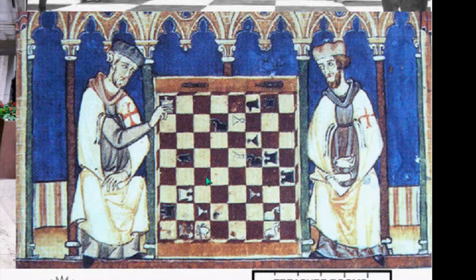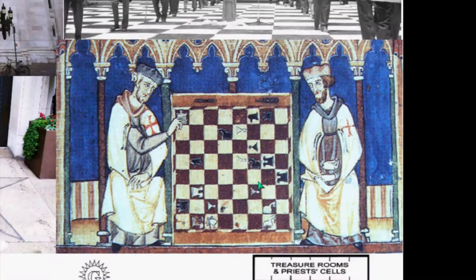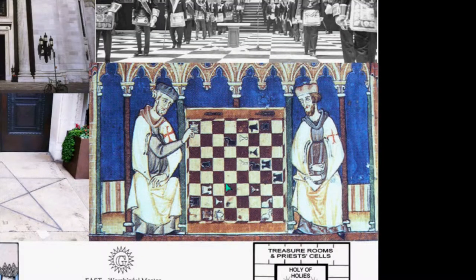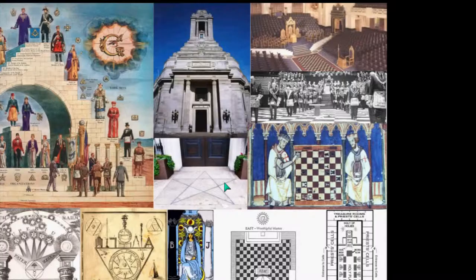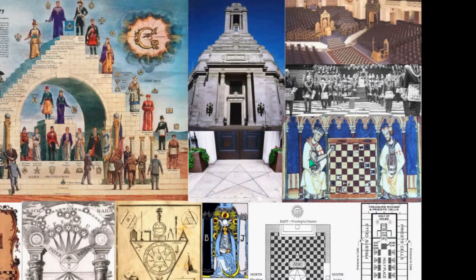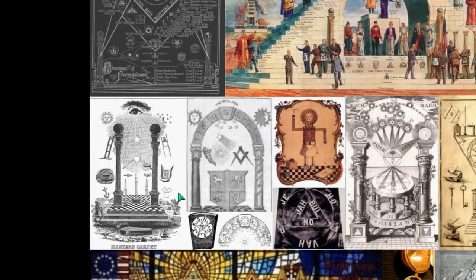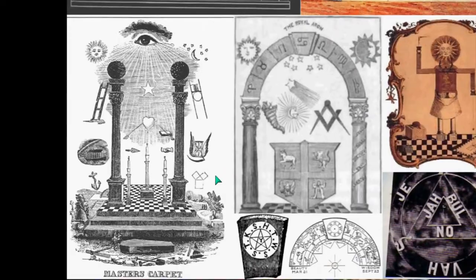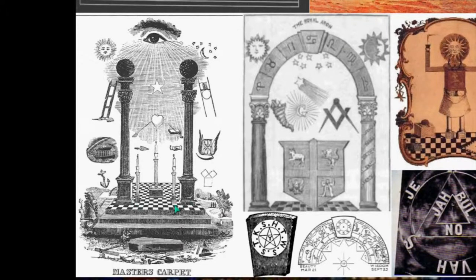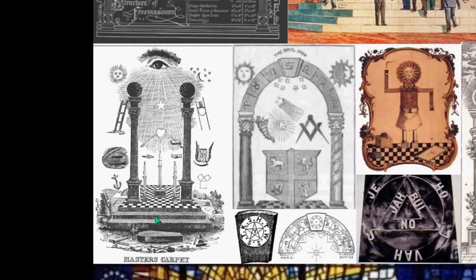Here is Knights Templar playing chess. I threw that in to show you that this is how they like to run society — with the pawns up front doing their dirty work. They like to cause war and chaos. That is their game, and they use that checkerboard as well.